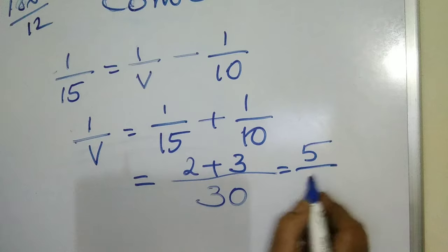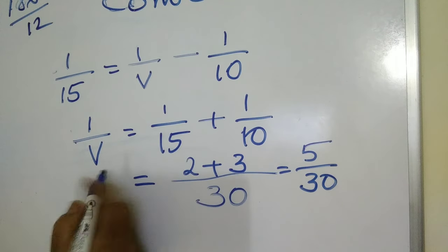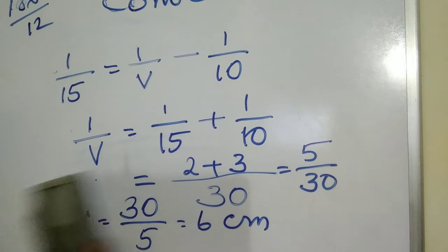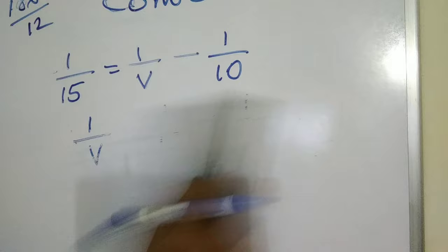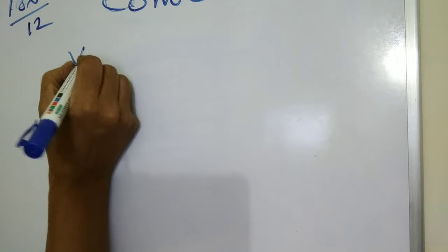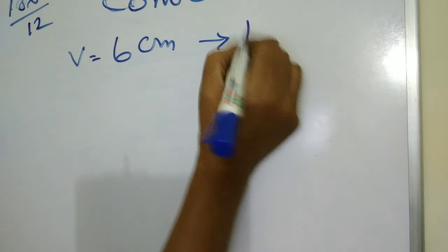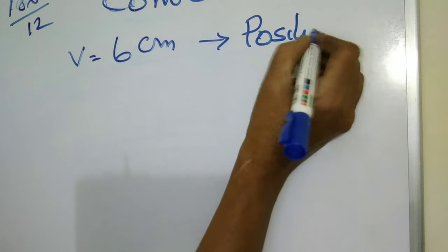This is 1 by v. So what will be v? We reciprocate this: 30 by 5, which is equal to 6 cm. Now we get v as 6 cm. Hope this is clear to you. V equals 6 cm. That is the position of the image.